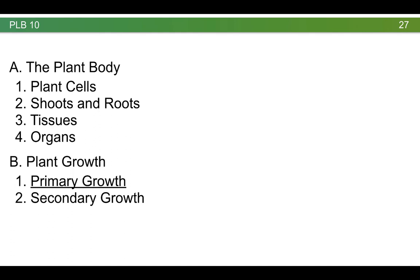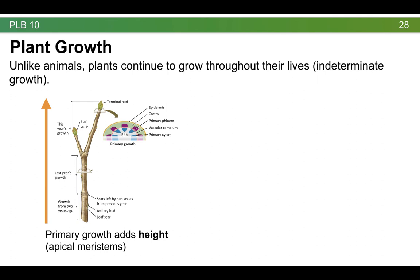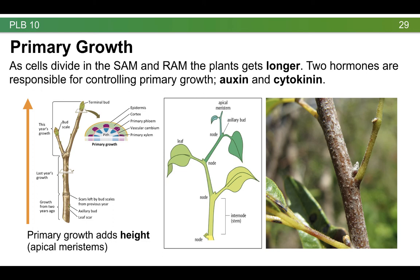Let's finish this lecture by thinking about plant growth. Unlike animals, plants continue to grow throughout their lives — this is called indeterminate growth. There are two main kinds of growth. The first is called primary growth, which adds height from the apical meristems. Both the shoot apical meristem (SAM) and the root apical meristem (RAM) add height or length, and this is called primary growth. As the cells divide in the SAM and the RAM, the plant gets longer. There are two hormones responsible for controlling this growth: auxin and cytokinin. Primary growth adds height or length, because it can also go down with the root apical meristem.